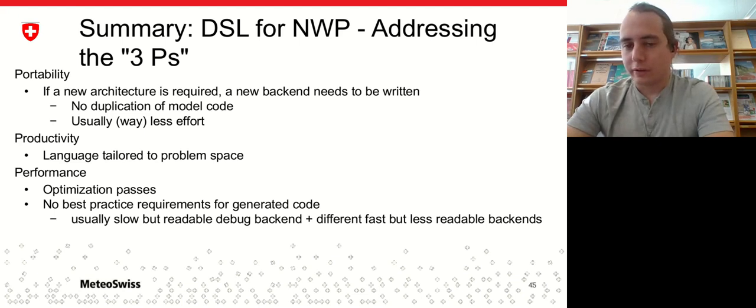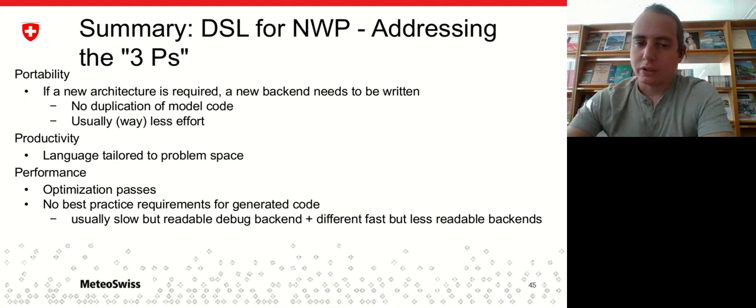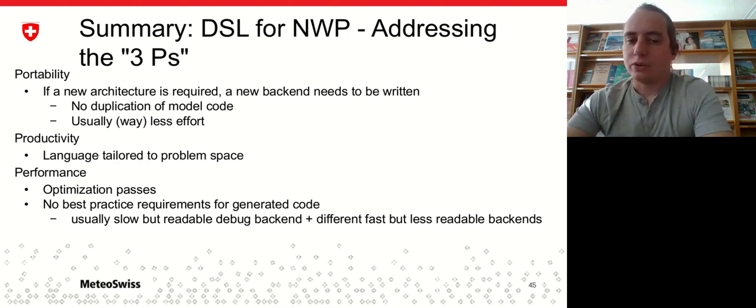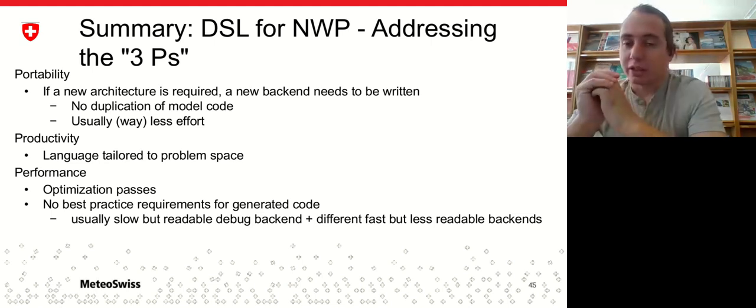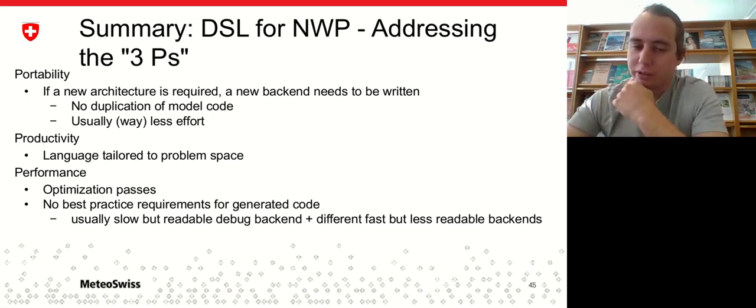This concludes the overview of the tool chain, and now I want to circle back to the purpose slide. And how we try to address the three P's using the DSLs. The portability is addressed in the sense that we have a completely decoupled code generator. So if there is a new architecture required to be supported, which is a very realistic scenario, you do not need to duplicate your model code. You just need to write a new code generator for that specific architecture. In the case of weather and climate models with thousands upon thousands of lines, this is usually way less effort. As we have seen, we are quite productive in writing, for example, finite volume code in Dusk. Because Dusk is tailor-made for it, you can write the reductions just as one-liners usually.